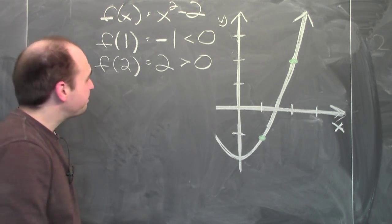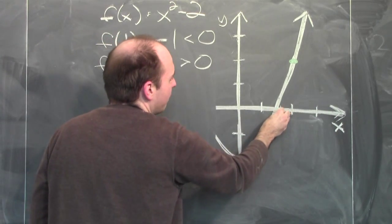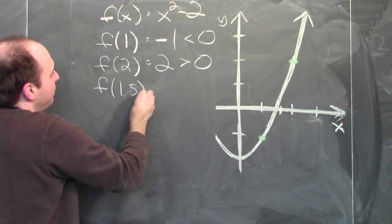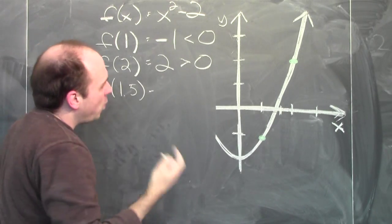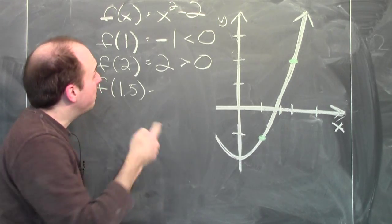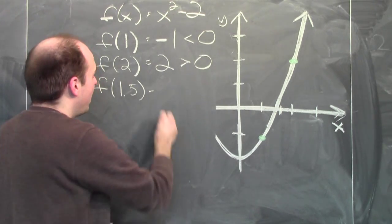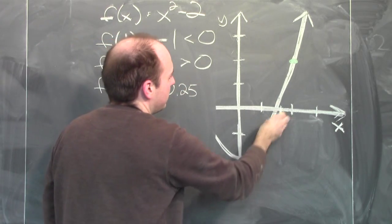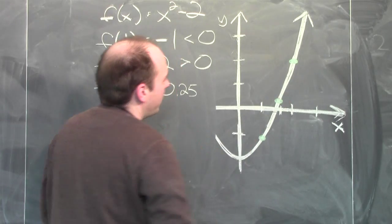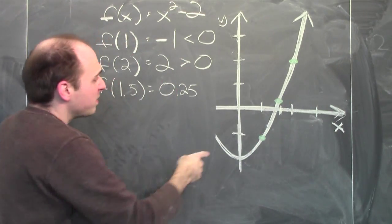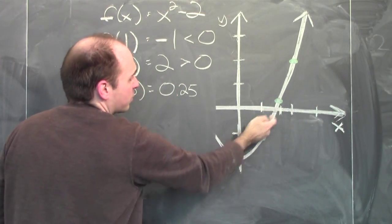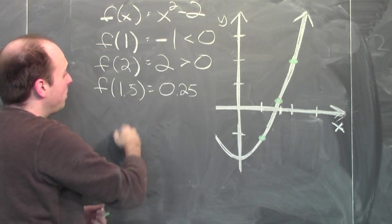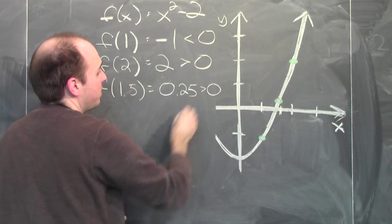I can do better. I can cut the interval between 1 and 2 in half. f of 1.5: 1.5 squared is 2.25, minus 2 is 0.25. So now I know that the square root of 2, where this graph crosses the x-axis, is between 1 (where the function is negative) and 1.5 (where the function is positive).